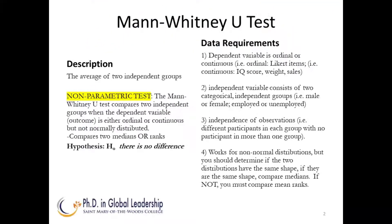The Mann-Whitney-U test is a nonparametric test and most think of it as an alternative to the independent t-test. As you can see, there are four data requirements. First, the dependent variable is ordinal or continuous. The independent variable consists of two categorical independent groups. There is an independence of observations. And four, the Mann-Whitney-U test works for non-normal distributions.